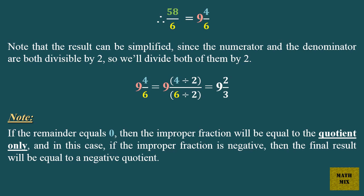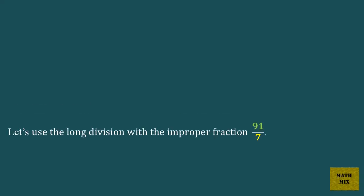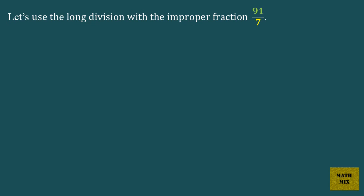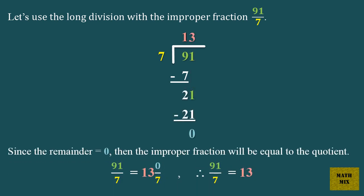Note: If the remainder equals 0, then the improper fraction will be equal to the quotient only. And in this case, if the improper fraction is negative, then the final result will be equal to a negative quotient. Let's use the long division with the improper fraction 91 over 7. Since the remainder equals 0, then the improper fraction will be equal to the quotient. 91 over 7 equals 13 and 0 sevenths. Therefore, 91 over 7 equals 13.